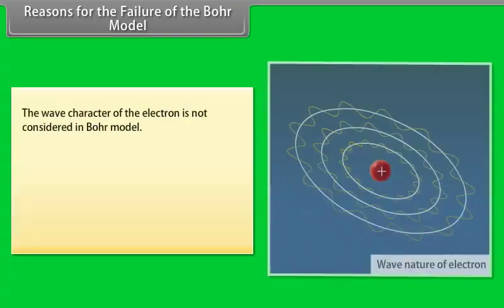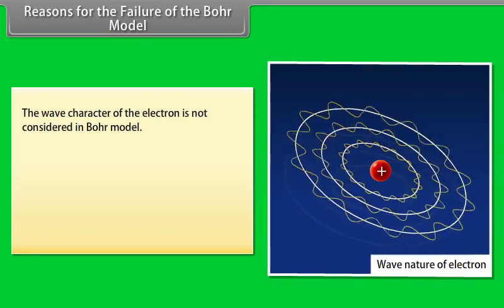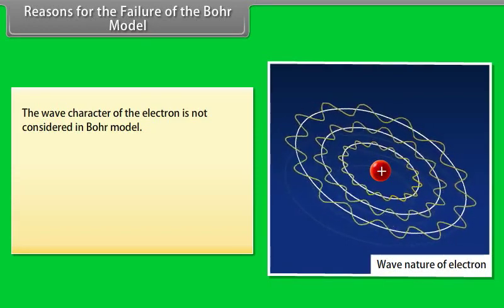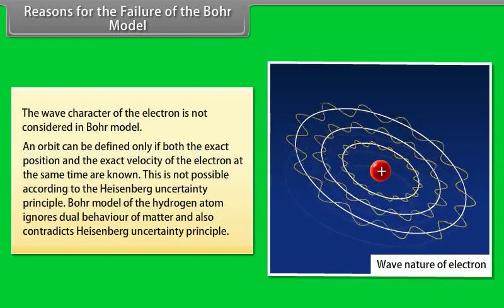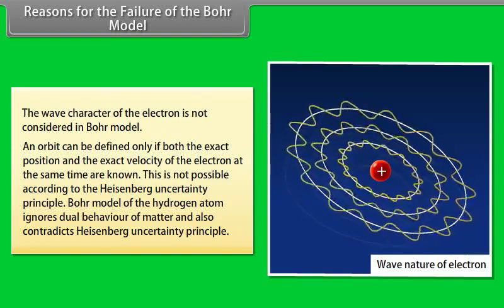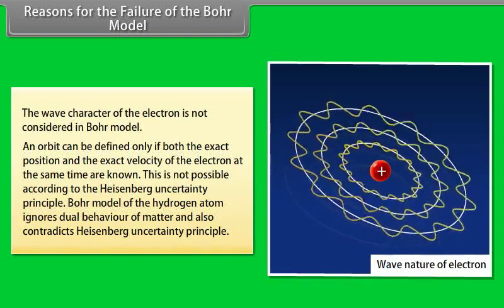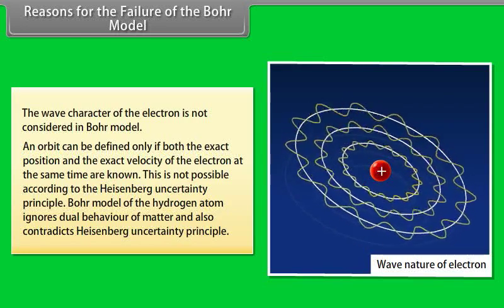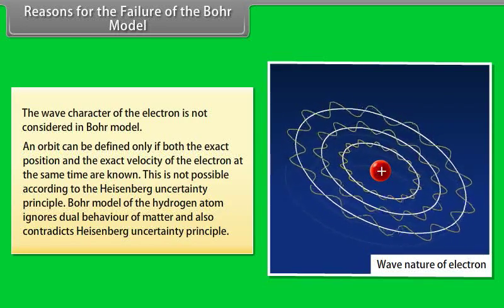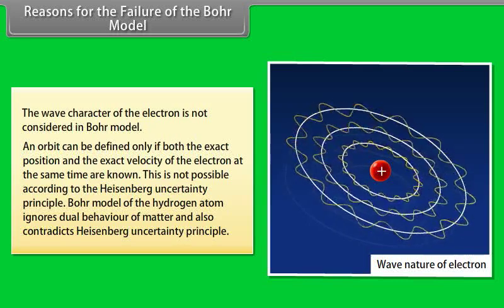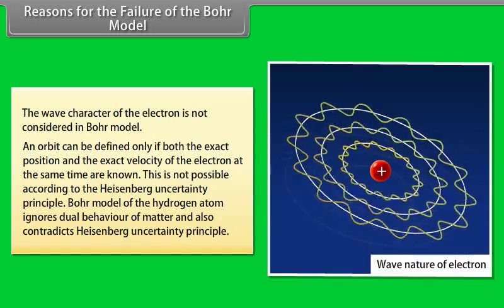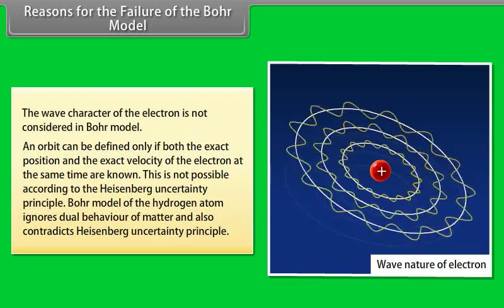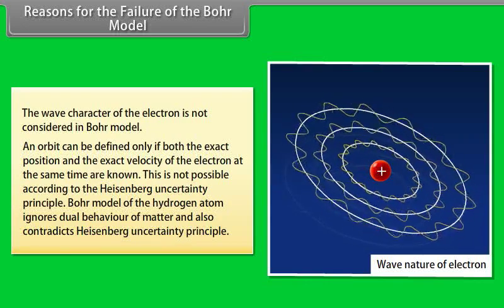Reasons for the failure of the Bohr model: The wave character of the electron is not considered in the Bohr model, and the orbit can be defined only if both the exact position and the exact velocity of the electron at the same time are known. This is not possible according to the Heisenberg Uncertainty Principle. The Bohr model of the hydrogen atom ignores the dual behavior of matter and also contradicts Heisenberg's Uncertainty Principle.